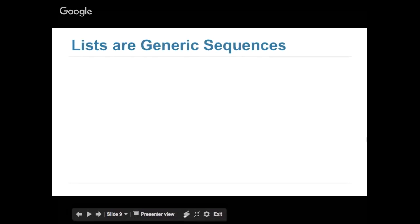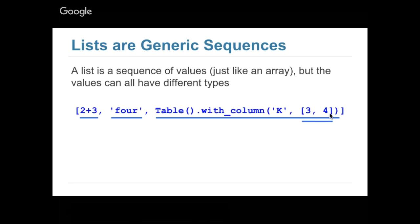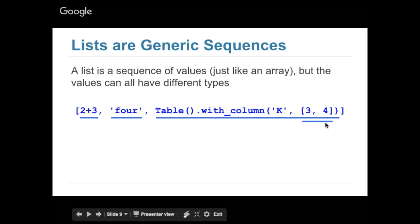Now let me answer the earlier question about getting rows from a table. Also worth noting: if you accidentally pass a list into a table column instead of make_array, the table will automatically convert the list into an array. So you can use a list there, though typically you'll use make_array or load tables from the internet.